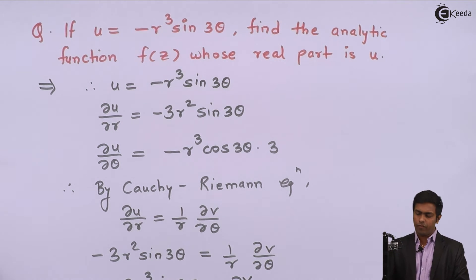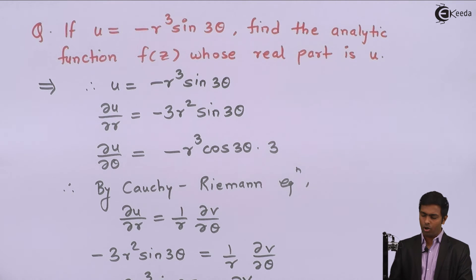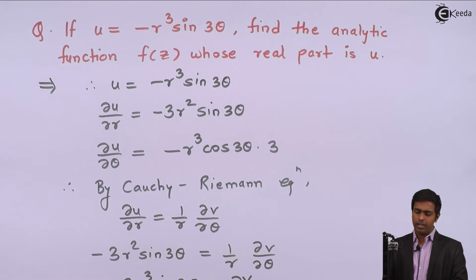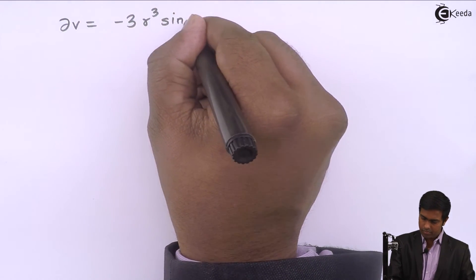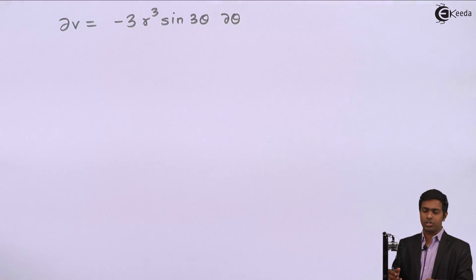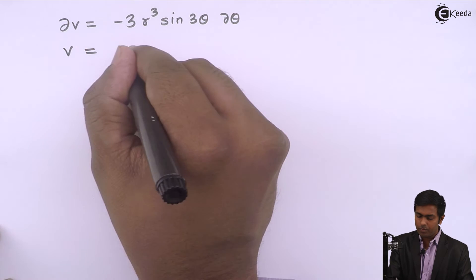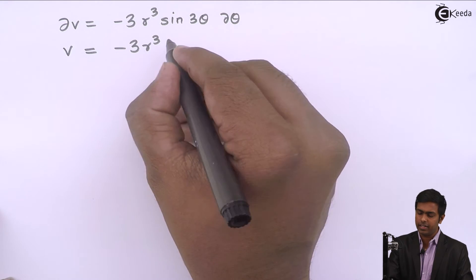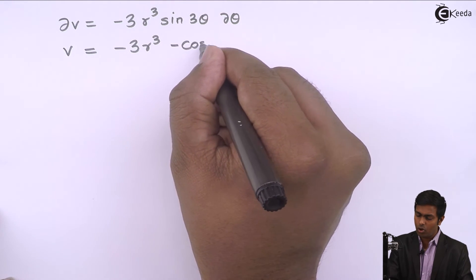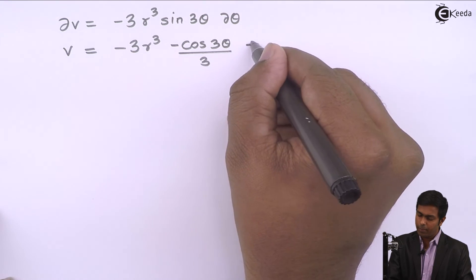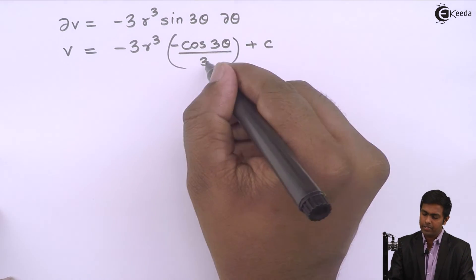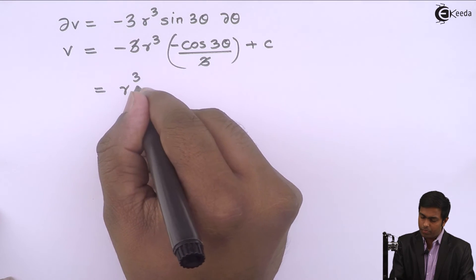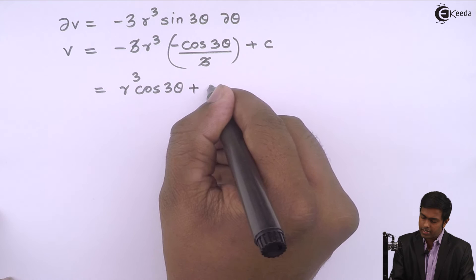To get the value of V, we separate variables, giving dV equal to minus 3R cubed sine(3θ) dθ. Integrating both sides, V equals minus 3R cubed as a constant times the integral of sine(3θ), which is minus cos(3θ) over 3, plus C. Cancelling the 3s, we get V equal to R cubed cos(3θ) plus C.